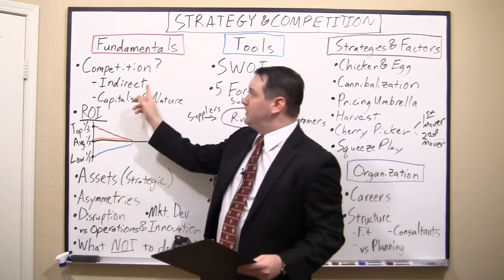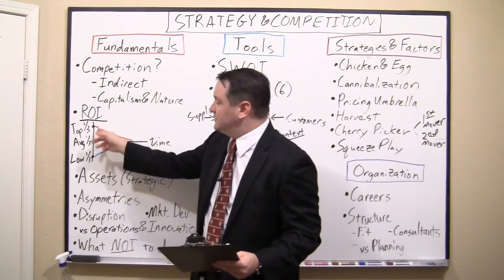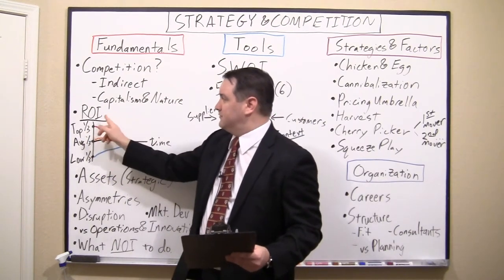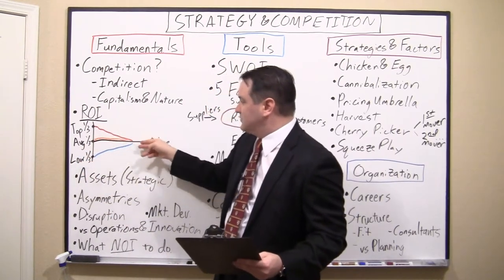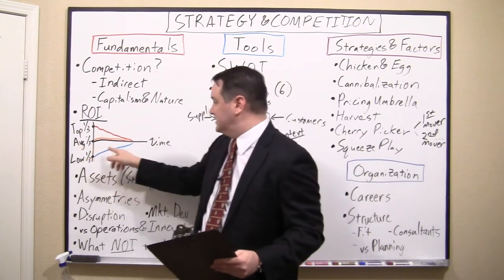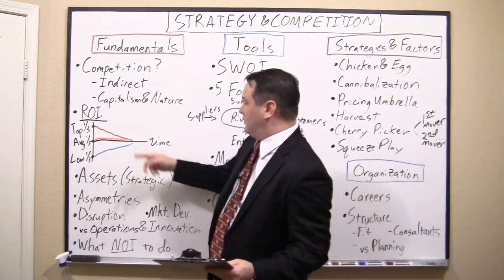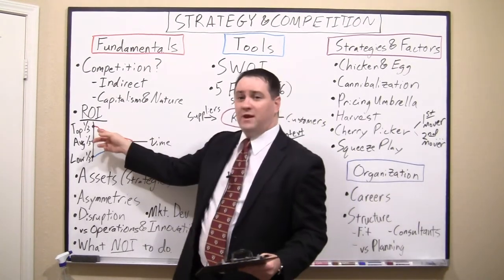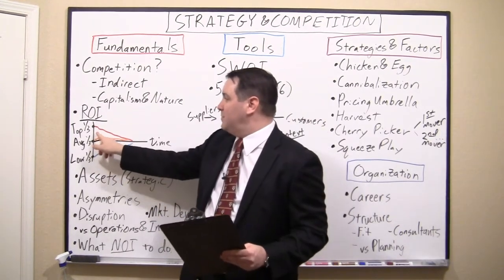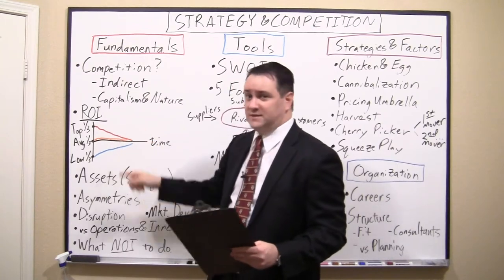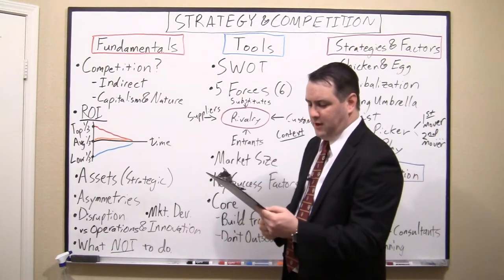The reason you want a good strategy is this: if you take companies and divide them by the top third in terms of return on investment, the middle third, and the lower third, over time those companies tend to aggregate to the average — essentially the cost of capital. It's hard to maintain a high level of return. That's really what strategy is all about: getting to and maintaining this high level of return. You want to beat the system. Those are a couple of counterintuitive points to get our heads around strategy.